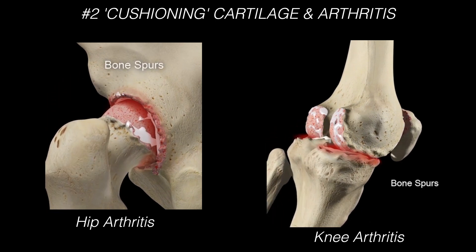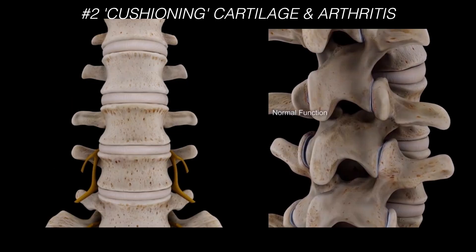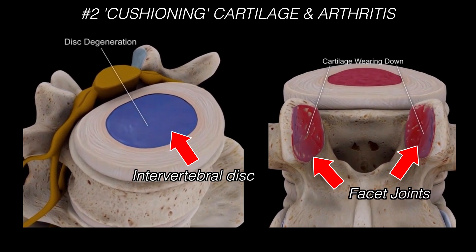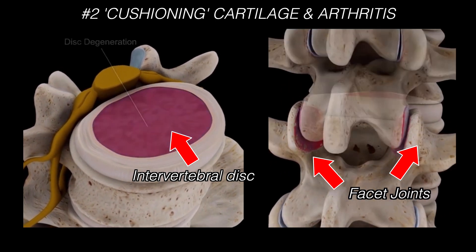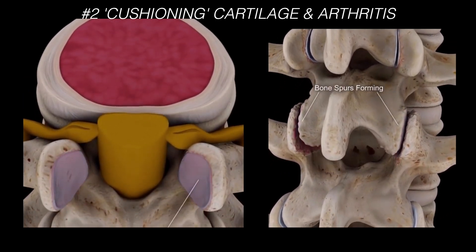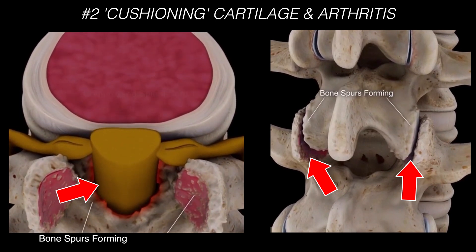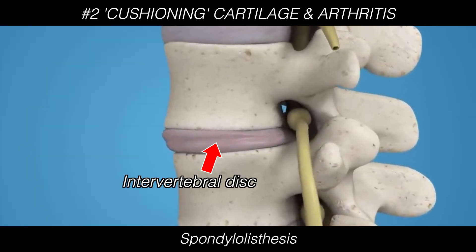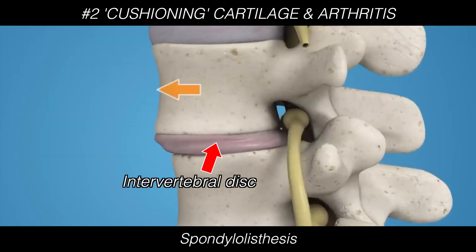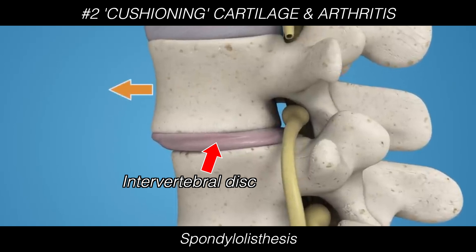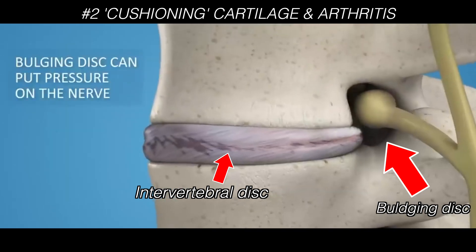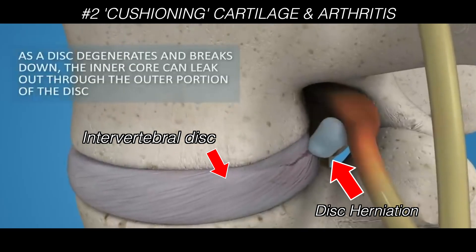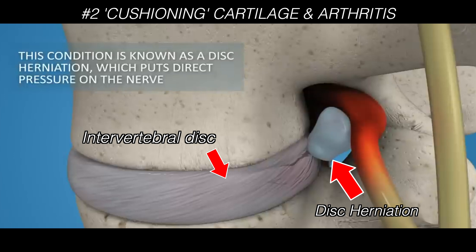This eventually leads to bone spur formation and narrowing of the joint spaces. In the spine, this includes both the intervertebral discs and the facet joints. This combination is called degenerative disc disease, because the wear and tear over the years eventually leads to bone spur formation and narrowing of the joint spaces, which can cause compression of nerves. Vertebral disc degeneration causes it to become unstable, which can cause a slipped disc or spondylolisthesis. It can also lead to a bulging disc or even disc herniation, where the inner core can leak out to the outer portion of the disc.